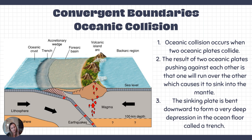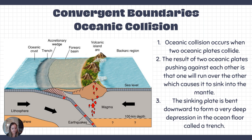Volcanic island arcs form from hydrated material that is subducting into the mantle. The oceanic plate going down has a lot of hydrated materials on top of it from the ocean water. That hydration enters the mantle, allowing steam to develop and magma to rise — it becomes less dense, rises to the surface, and we see volcanoes created.